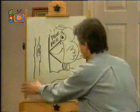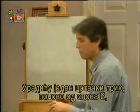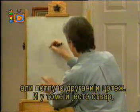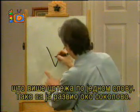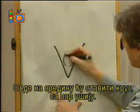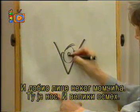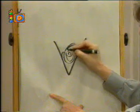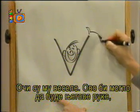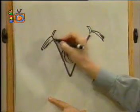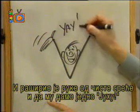I'll do a doodle trick from the letter V again, but a totally different cartoon - that's the idea. Practice by going through the alphabet and try to come up with as many different sketches for the same letter - that's how you develop a keen eye for cartooning. Right in the middle here, I'll put a circle with some ears, a guy's face, his nose, a big smile, his eyes up - now the V can be his arms. Here are his hands, and he's raising his hands. 'Yay!' Sound effect.